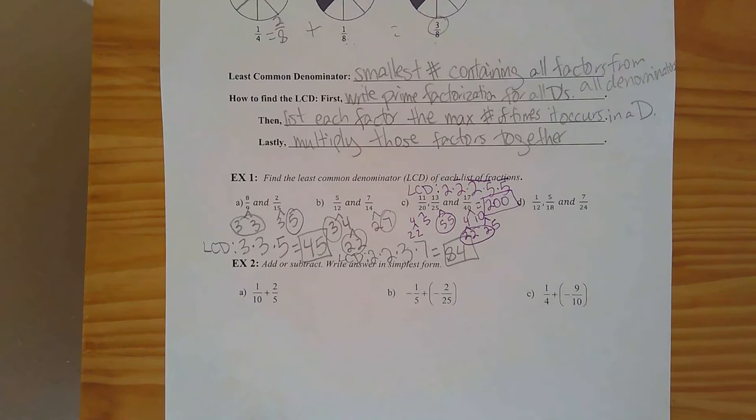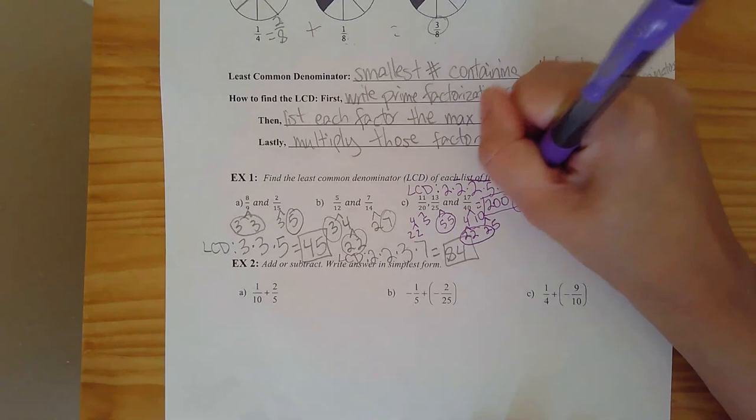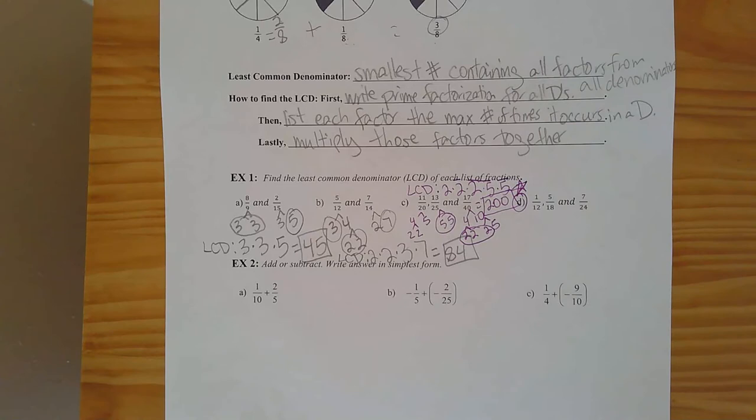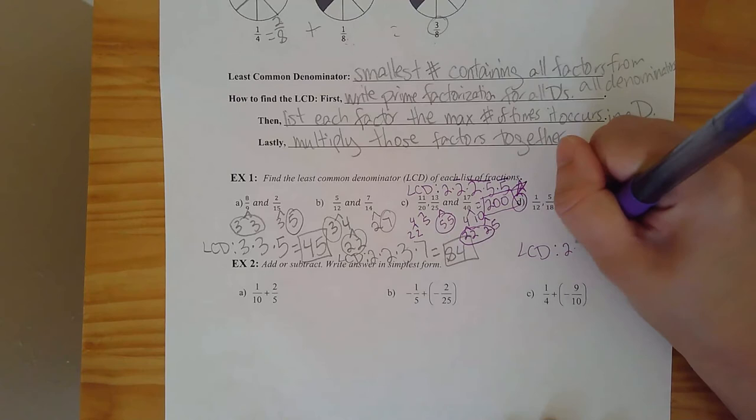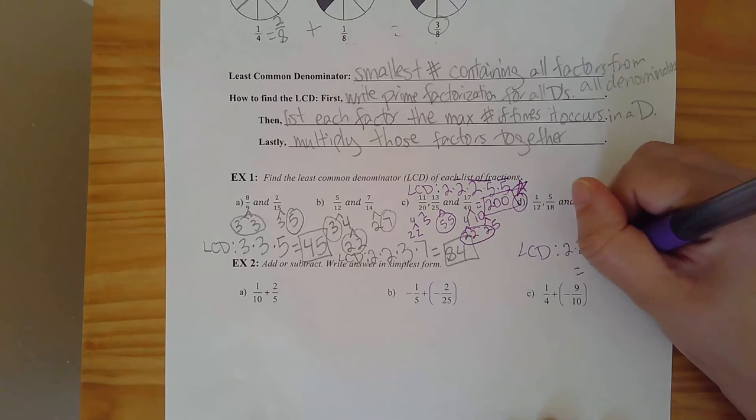Last one, part D — I'll let you try this one. Our denominators are 12, 18, and 24. Make those factor trees and find the least common denominator. Go ahead and pause your video and find it. The answer: you should need three twos and two threes, and when you multiply everything together, you get 72.